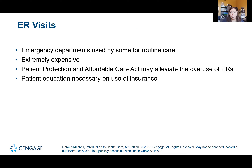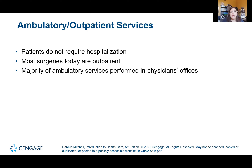ER visits are a huge area for cost control — some people use ERs like a primary care doctor instead of reserving them for the most important emergencies. The issue is that ER visits are very expensive, so people need to be educated about when to use an ER. Fortunately, we are seeing some help with the increase in urgent cares — people may go to urgent care for those less emergent needs. Ambulatory outpatient services are for patients who don't require hospitalization — most surgeries are done outpatient now.